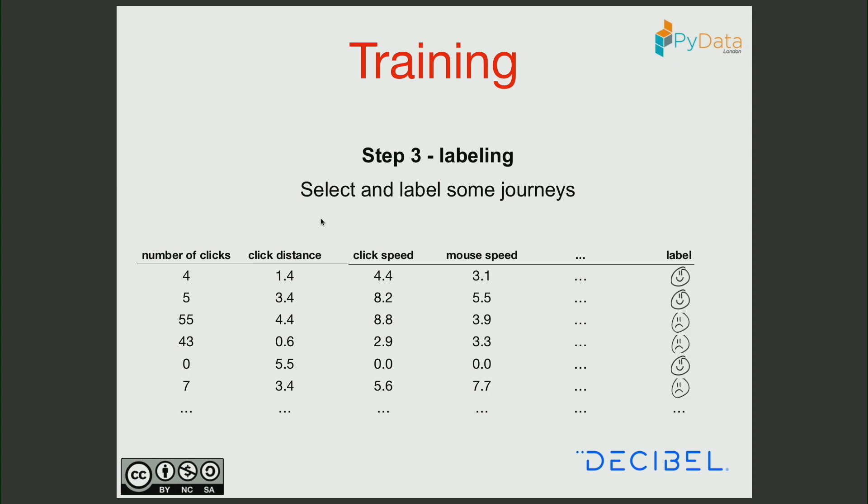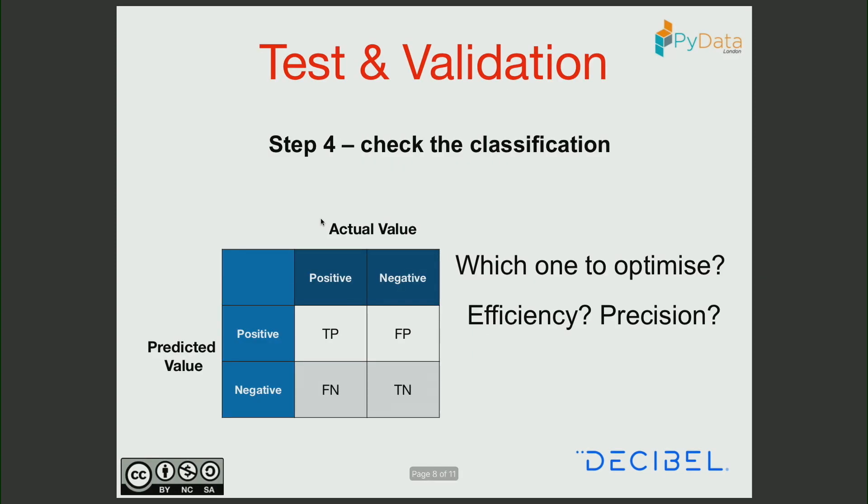Once we obtain the good features, we select some user journeys, label them, and train the model. At the end we validate our model. It's a classification problem, so we obtain this sort of confusion matrix.